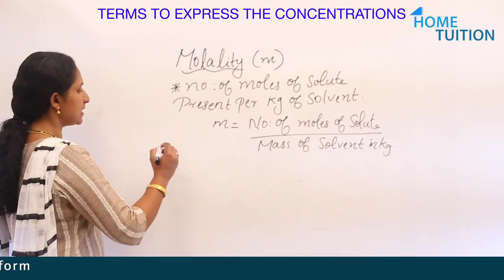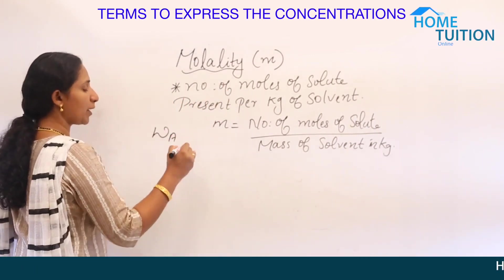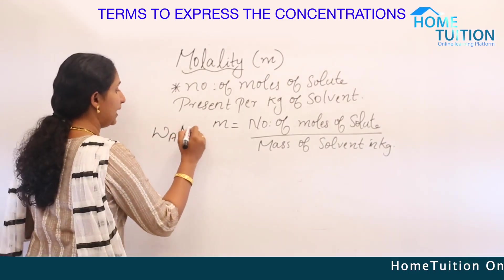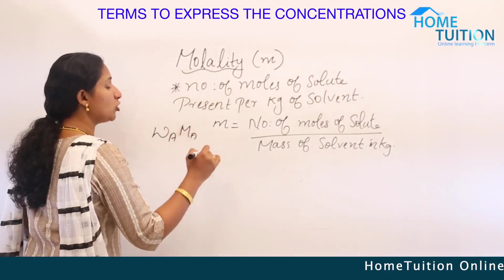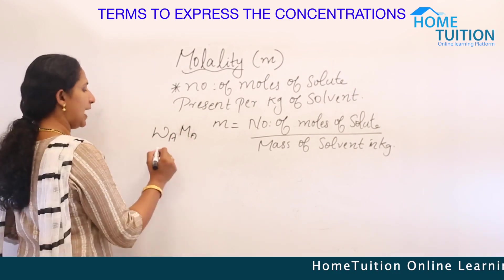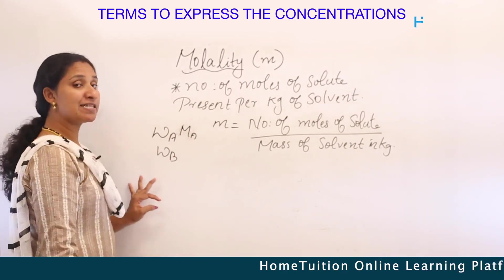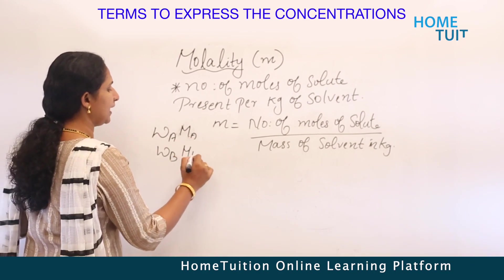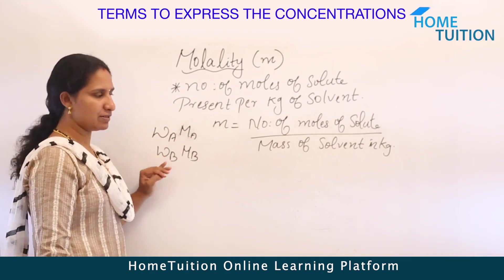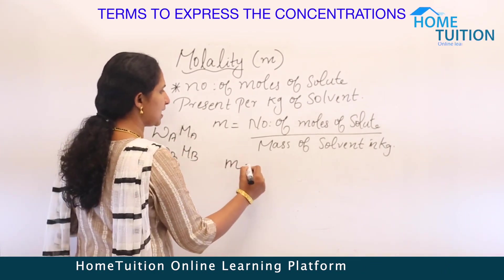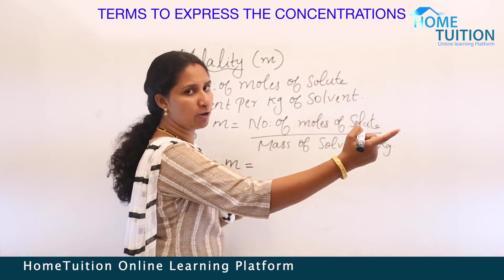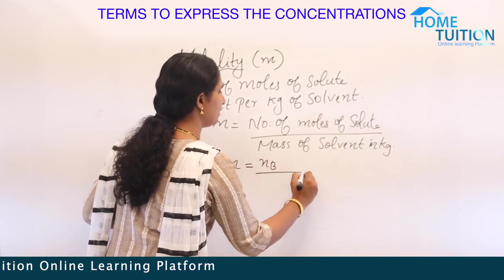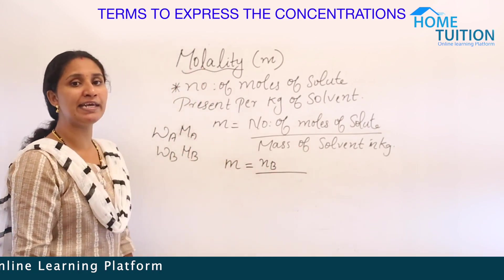Let WA be the weight of the solvent and MA be the molecular mass of the solvent; WB is the weight of the solute and MB is the molecular mass of the solute. Then molality equals the number of moles of solute, NB, divided by mass of solvent in kilograms.